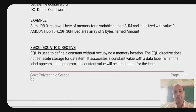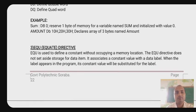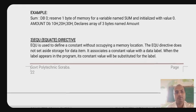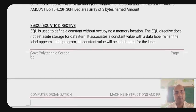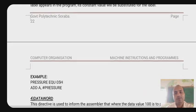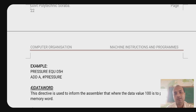In the EQU (equate) directive, it defines a constant without occupying a memory location. For example, a variable named 'pressure' can be equated to a constant value of 05H.